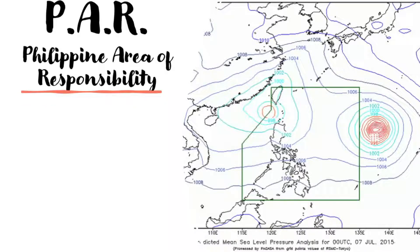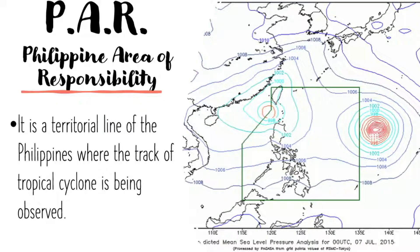Speaking of PAR, it stands for Philippine Area of Responsibility. PAR is a territorial boundary line of the Philippines where the track of a tropical cyclone is being observed. If there is a tropical cyclone moving towards the Philippines, the PAR serves as the guide to determine whether a tropical cyclone is inside the Philippines or approaching its boundaries.